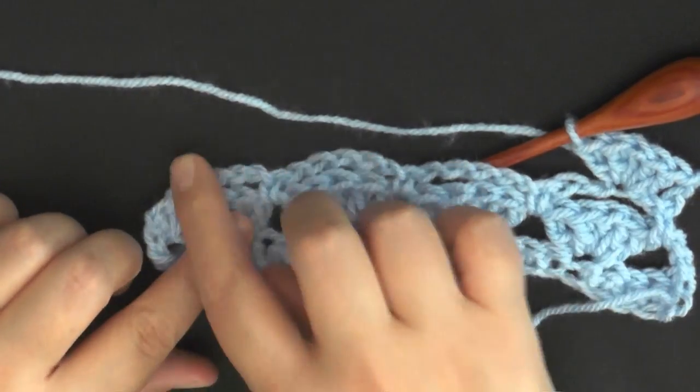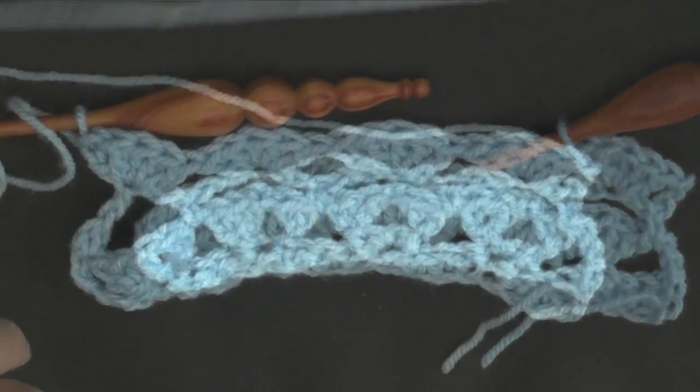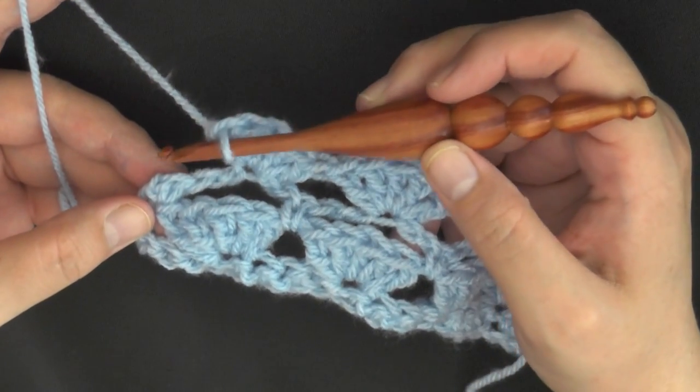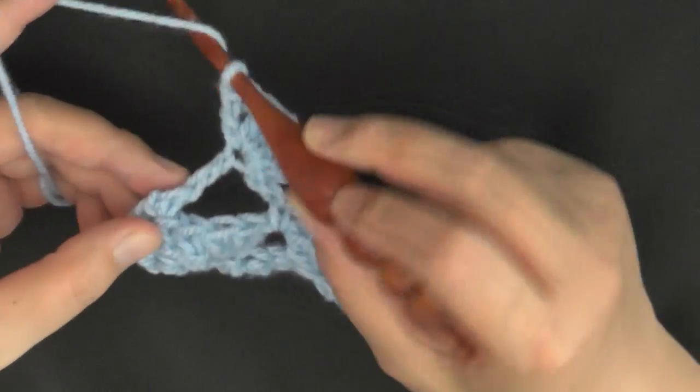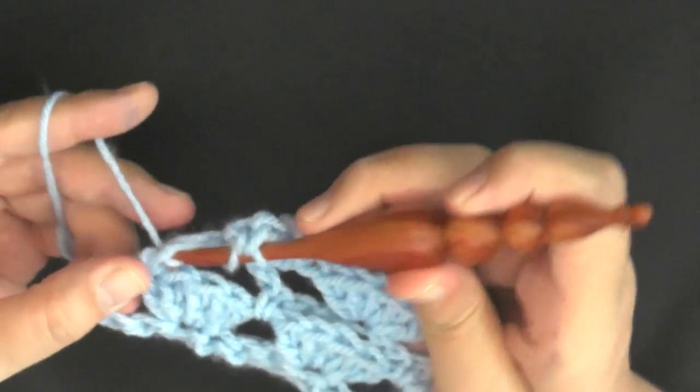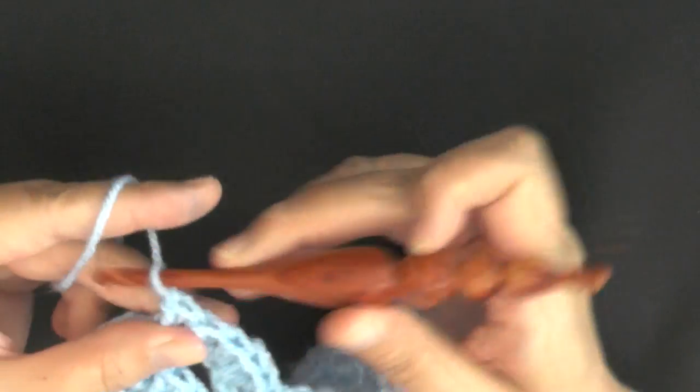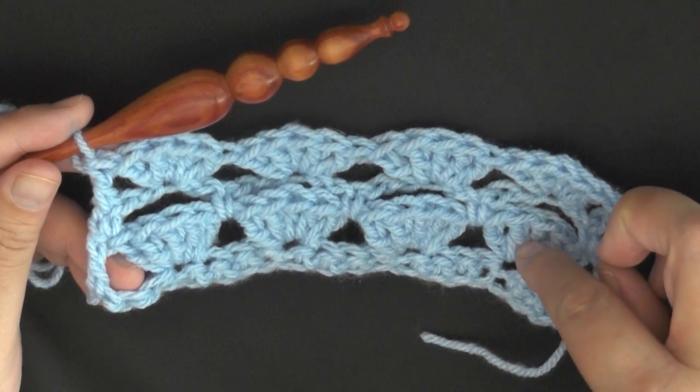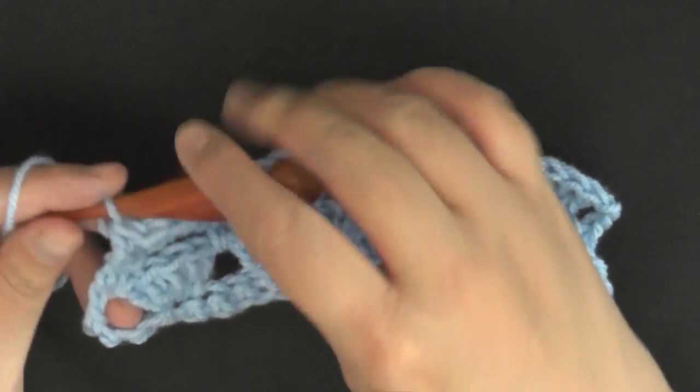When you get to the end of your row and you've done your very last chain, you'll want to put a double crochet worked in the single crochet, the very last single crochet of your row, and that will end your row. So that's one, two, three. This is row four.